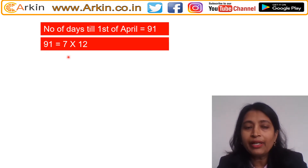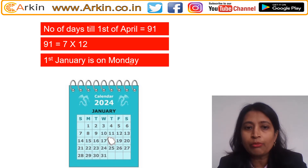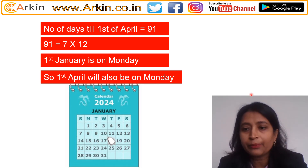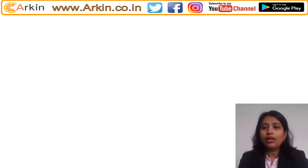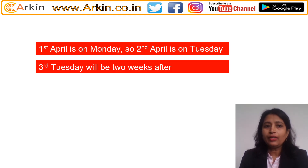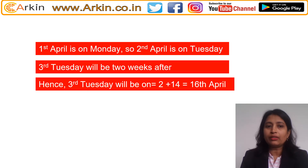Now, 91 is a multiple of 7: 91 = 7 × 13. So if January 1st is on Monday, April 1st will also fall on a Monday. We know April 1st is Monday, so April 2nd is Tuesday. The third Tuesday will be two weeks after April 2nd, which is 2 + 14 = 16th April.